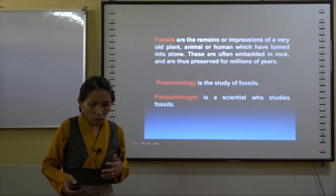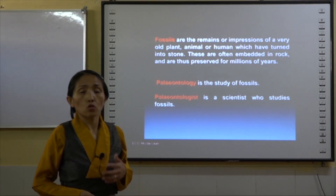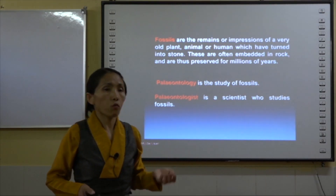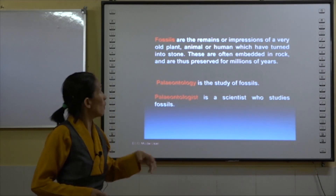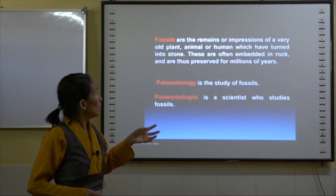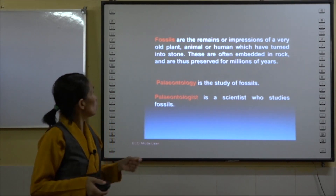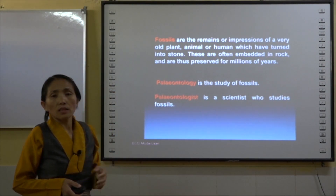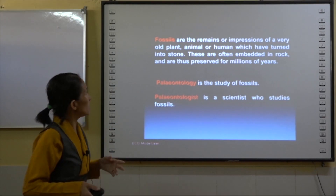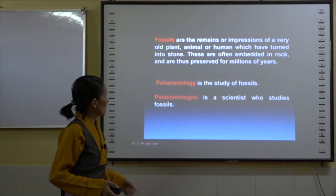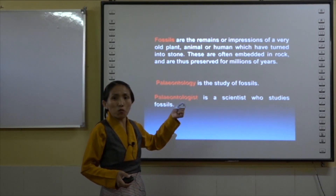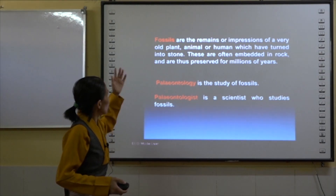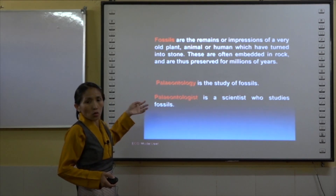Before discussing the features of human fossils, you must know the meaning of fossils. Fossils are the remains or impressions of a very old plant, animal, or human which have gradually turned into stone and are mainly fixed into rock, thus having been preserved for millions of years. The study of fossils is called paleontology — it is the subject that deals with studying fossils.